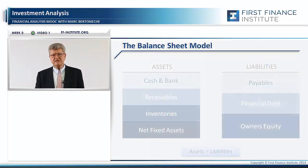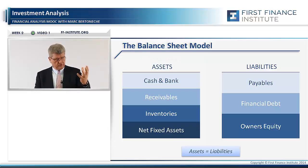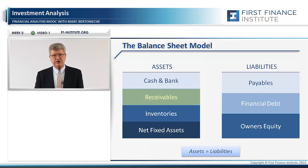As you can see on the slide, on the one side, you have the use of money by the company: the cash and bank, the money which is used in giving credit to the customers — the account receivables — all the money involved in inventories, and the money spent in long-term assets: machine equipment, etc.